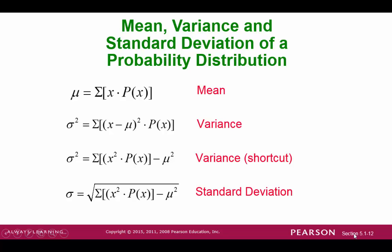Now we will relate these probability distributions to our descriptive statistics. Each of these distributions has a mean, a variance, or a standard deviation. And here are the formulas for our mean, variance, and standard deviations.